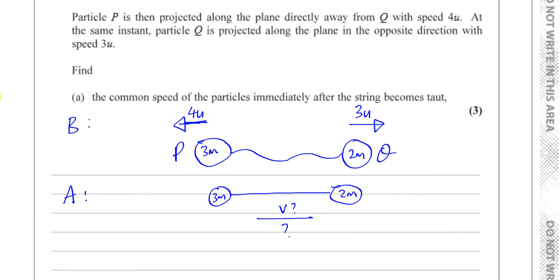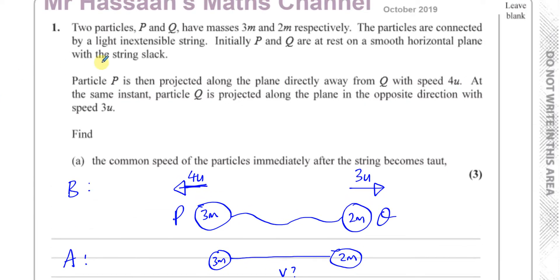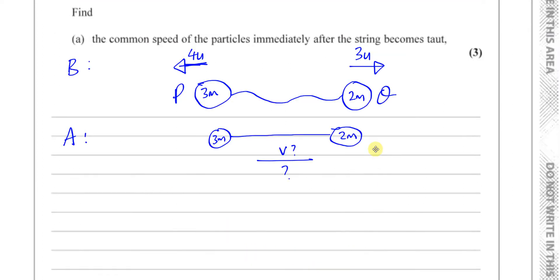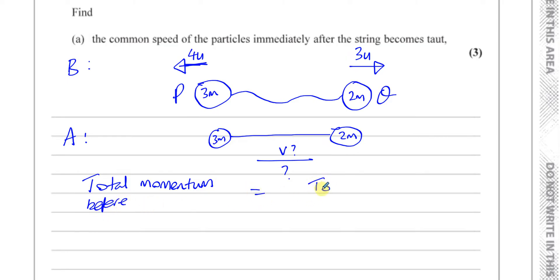So we think about the total momentum before the collision and the total momentum after the collision. We can say the total momentum before the string becomes taut is equal to the total momentum after — that's conservation of momentum.